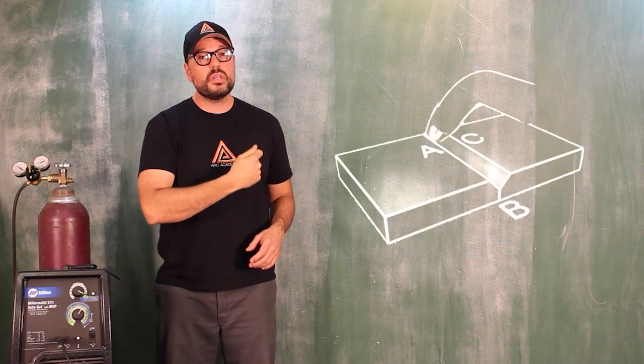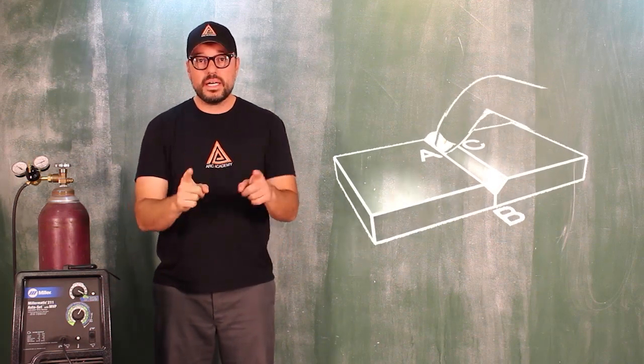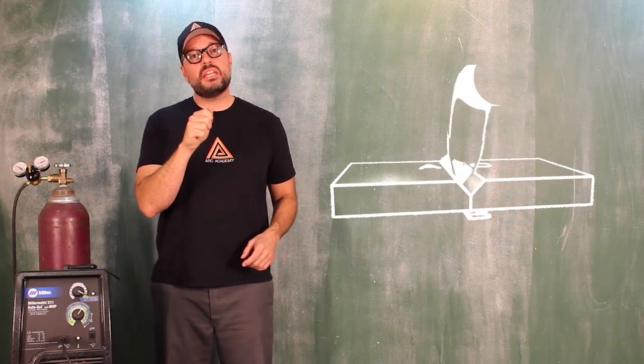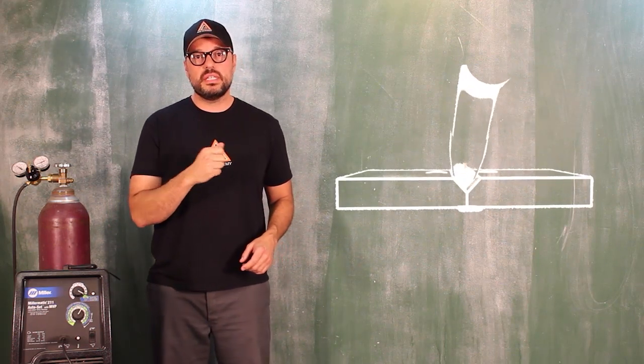We want to start pulling through the weld zone, but at the same time what we're going to do is we are going to take the arc and we're going to move back and forth between the A and C edge.